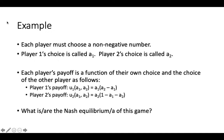Let's start with an example. Consider the following two-player game. Each player must choose a non-negative number. We will call player 1's choice A1 and player 2's choice A2. Each player's payoff is a function of both their own choice and the choice of the other player, described using their utility functions. Player 1's utility equals A1 times the quantity A2 minus A1. Player 2's utility equals A2 times the quantity 1 minus A1 minus A2. Our task is to find the Nash equilibrium or equilibria of this game.